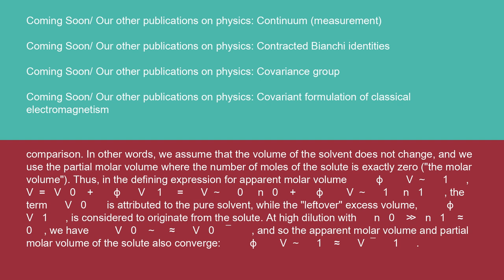Thus, in the defining expression for apparent molar volume φV₁: V = V⁰N₀ + φV₁N₁, the term V⁰N₀ is attributed to the pure solvent, while the leftover excess volume φV₁N₁ is considered to originate from the solute. At high dilution with N₀ >> N₁ ≈ 0, we have V⁰ ≈ V̄₀, and so the apparent molar volume and partial molar volume of the solute also converge: φV₁ ≈ V̄₁.